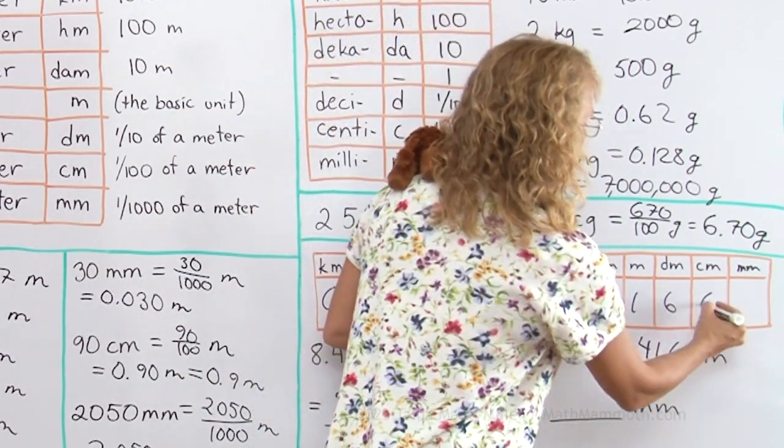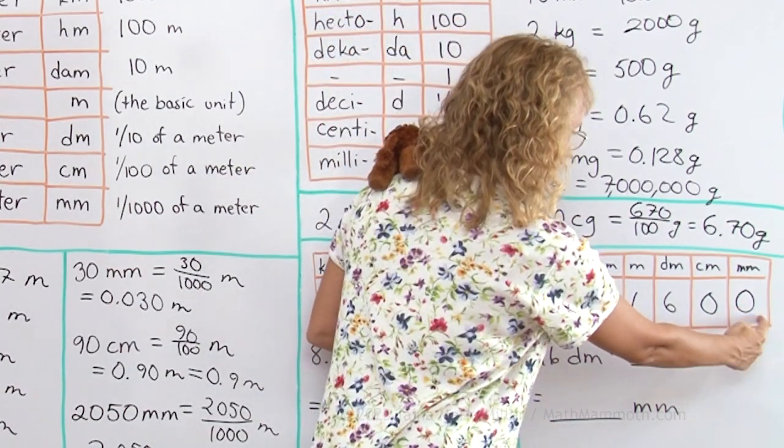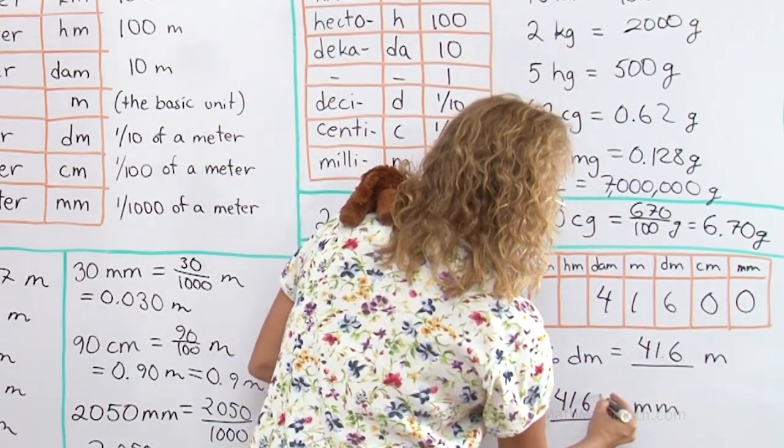Then in millimeters, I will put the zeros here. The decimal point would be over here. So I have 41,600 millimeters.